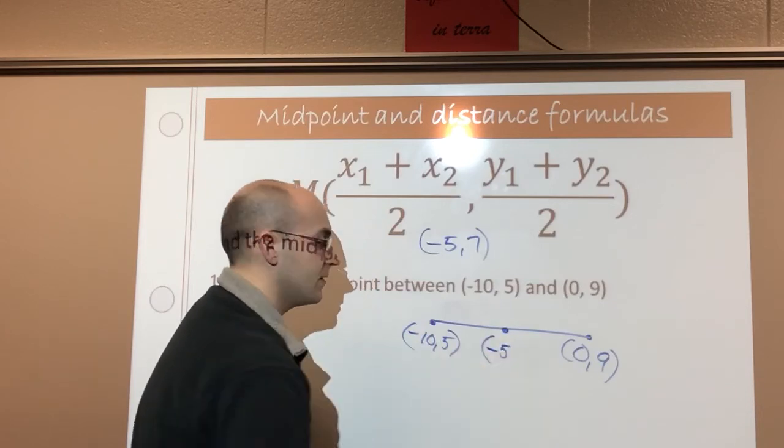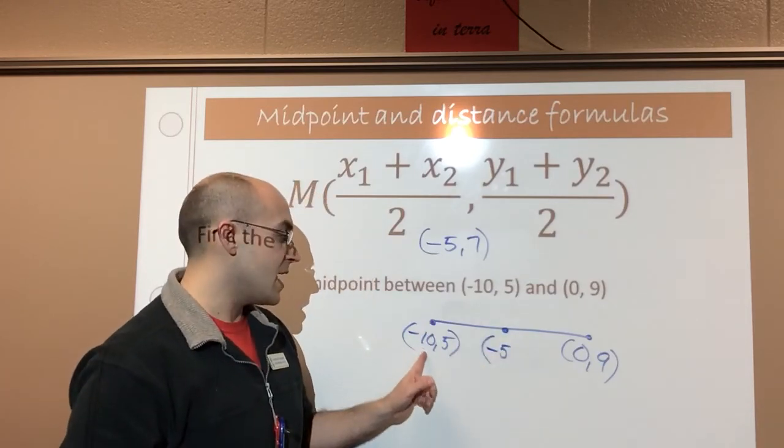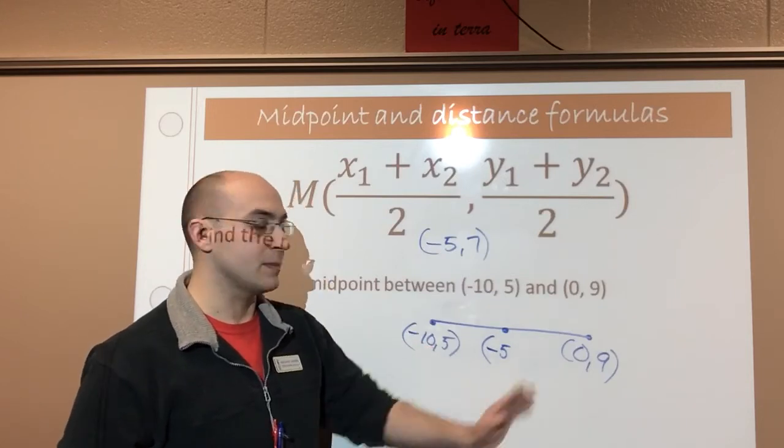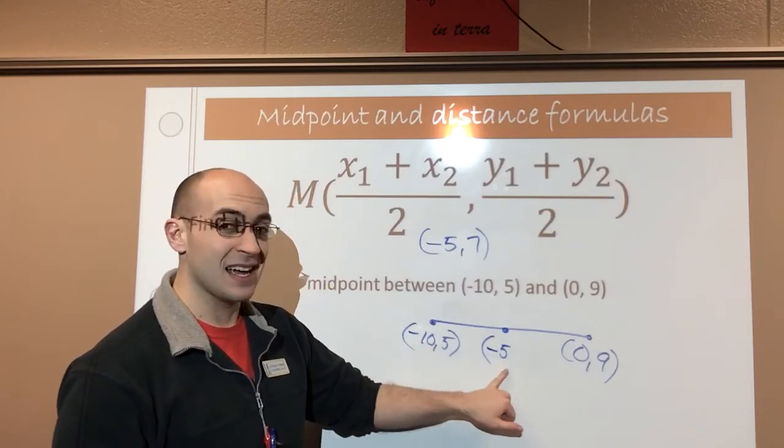Don't make a mistake and say 5 because it's not 5. I'm on the negative part of the axis if I were to draw it on a grid. And I would be going over to 0. So the point is going to be negative 5.